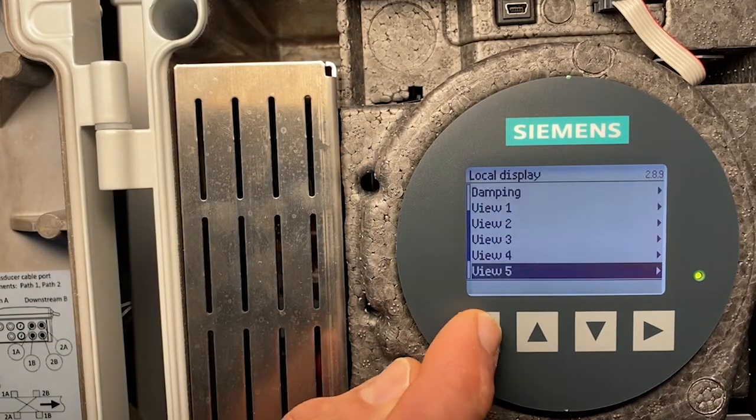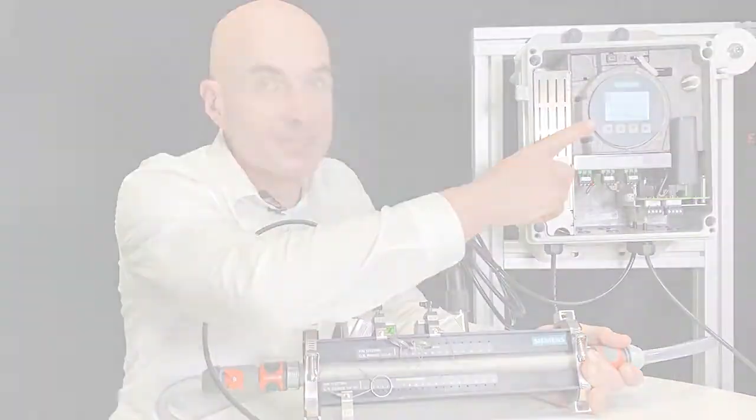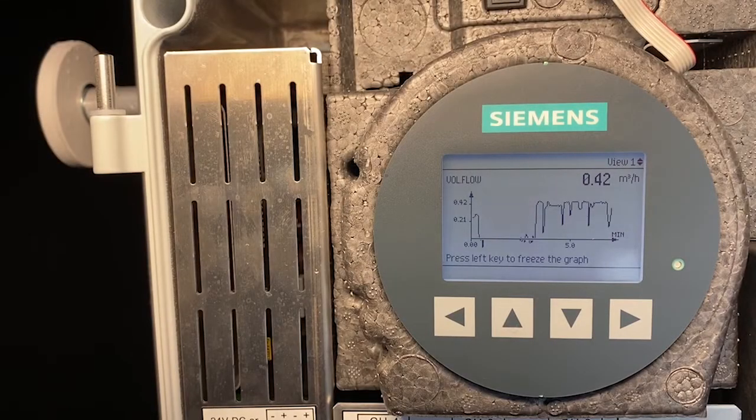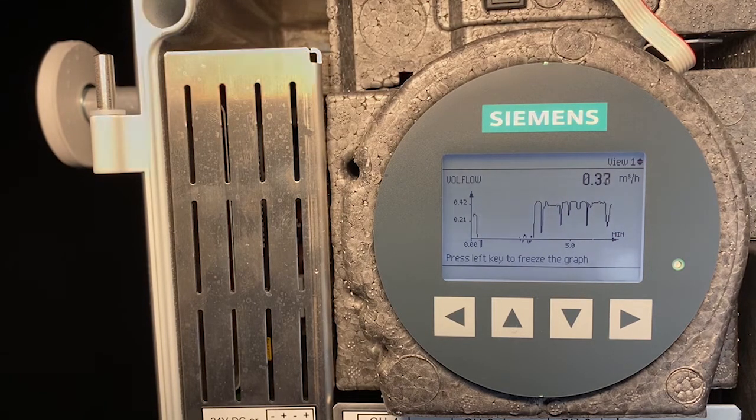Back to the fuse. Now, let's have a look at a different fuse. View 1. I change the flow and you can see the change of the value and the changing graph.